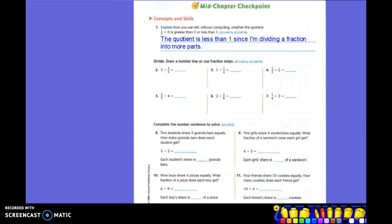2 through 7 say draw a number line or use fraction strips. So number 2 says 3 divided by 1 half. If I draw a number line and this is 3 and this is 1, or that would be 0, and then I would have 1 and 2. And I divide each of those in half. How many parts do I have now? 1, 2, 3, 4, 5, 6. So I should see a number line on those.